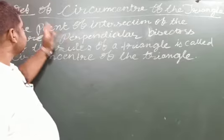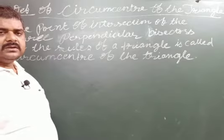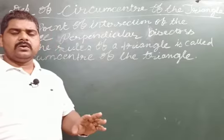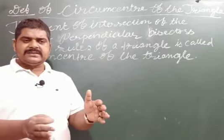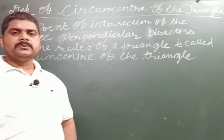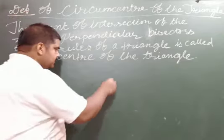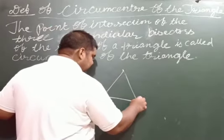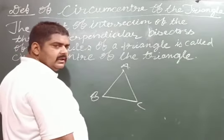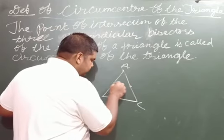Regarding the definition of the circumcenter of a triangle: three perpendicular bisectors can be drawn for any triangle. The point of intersection of these three perpendicular bisectors is known as the circumcenter of the triangle. In triangle ABC, drawing three perpendicular bisectors through the midpoints of each side, their meeting point is the circumcenter.